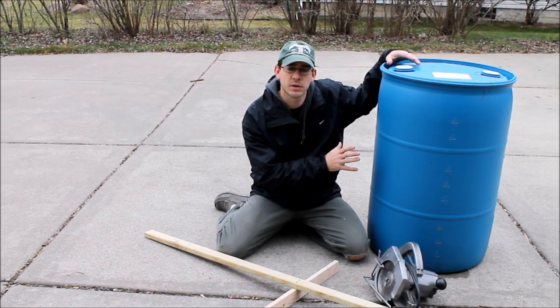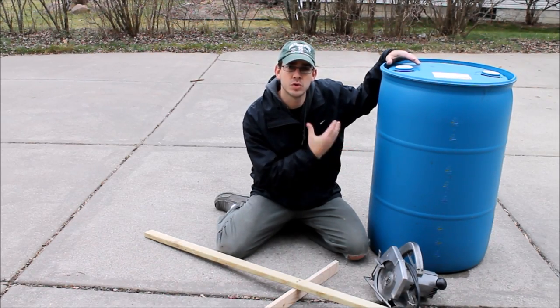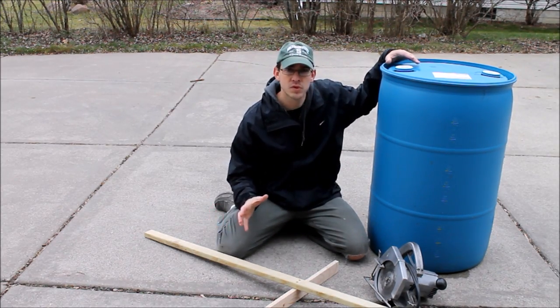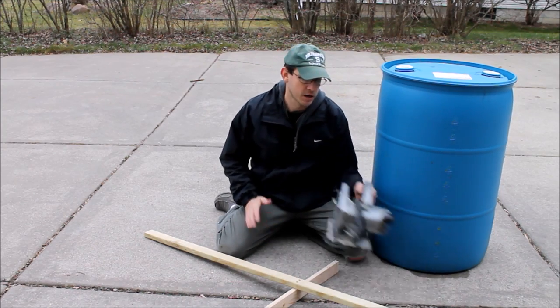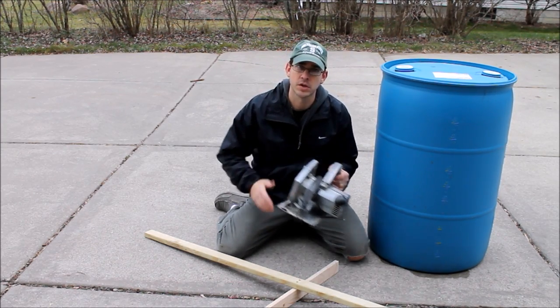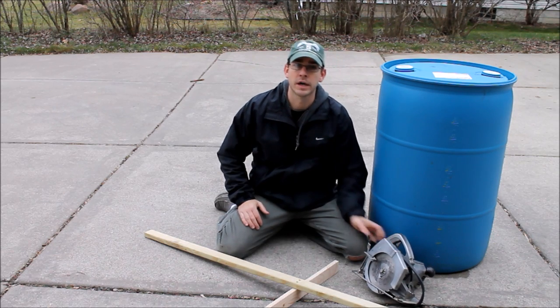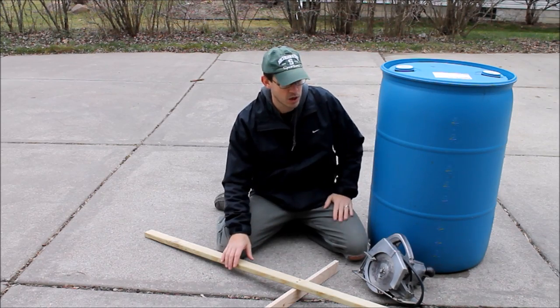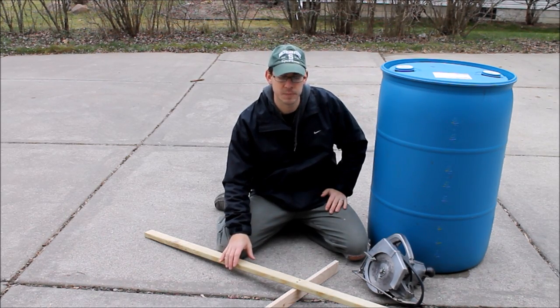Now that we've got our barrel selected, we're going to cut this up into two grow beds. Each 55-gallon drum will make two grow beds. A couple of tools that I like to use: I've got a circular saw here. You can also use a jigsaw or even an angle grinder. But I found this to be the quickest with just a rough-cut blade in it.